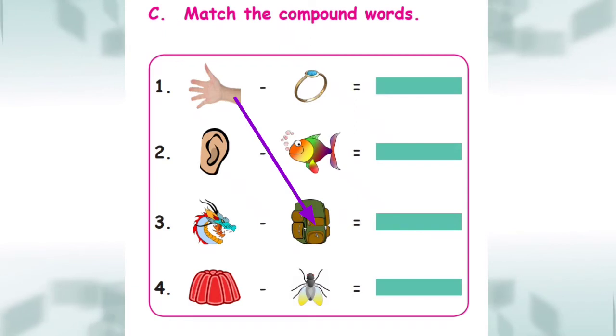Second question. Second picture is, ear. Which picture combined with ear? Ear, ring? Yes. Ear, fish is not correct. Ear, fly is not also correct. So, ear, ring is a right answer. Second question answer is, ear plus ring. Earring.